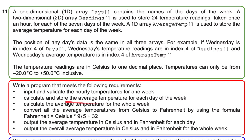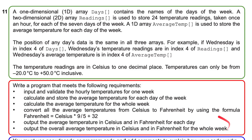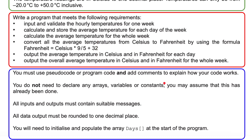You've got to write a program that meets the following requirements: input and validate the hourly temperatures for one week — so each day we're going to put 24 temperatures in, making sure they're between minus 20 and 50. Then calculate and store the average temperature for each day, calculate the average for the whole week, convert all average temperatures from Celsius to Fahrenheit using the formula: Fahrenheit equals Celsius times 9 over 5 plus 32, and output the averages in both Celsius and Fahrenheit for each day and for the whole week. Sounds complicated, but we'll be okay.